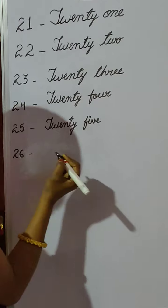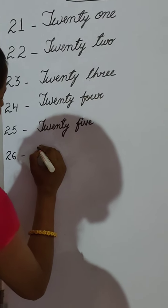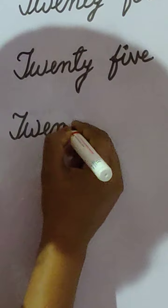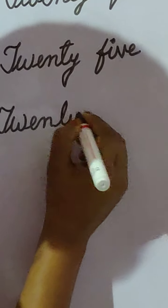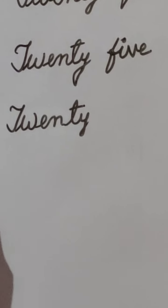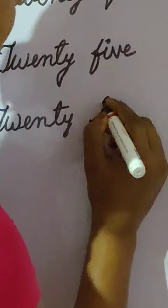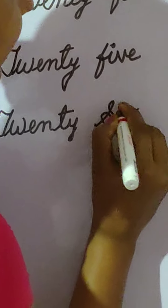Then 26. T, W, E, N, T, Y — 20. Then, what do we have to write? 26. After 20, we have to write the spelling of 6 — S, I, X — 6. TWENTY-SIX.